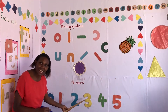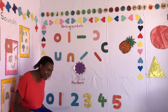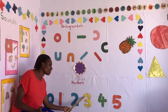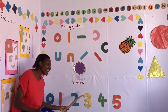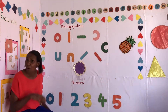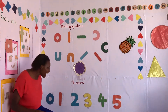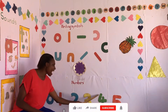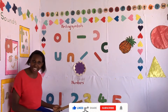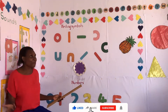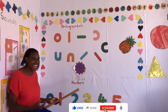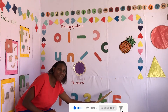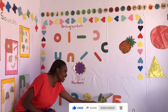Number three, number three, where are you? Here I am, here I am, how do you do? Number four, number four, where are you? Here I am, here I am, how do you do? Number five, number five, number five, where are you? Here I am, here I am, how do you do? Number one, number one, where are you? Here I am, here I am, how do you do?